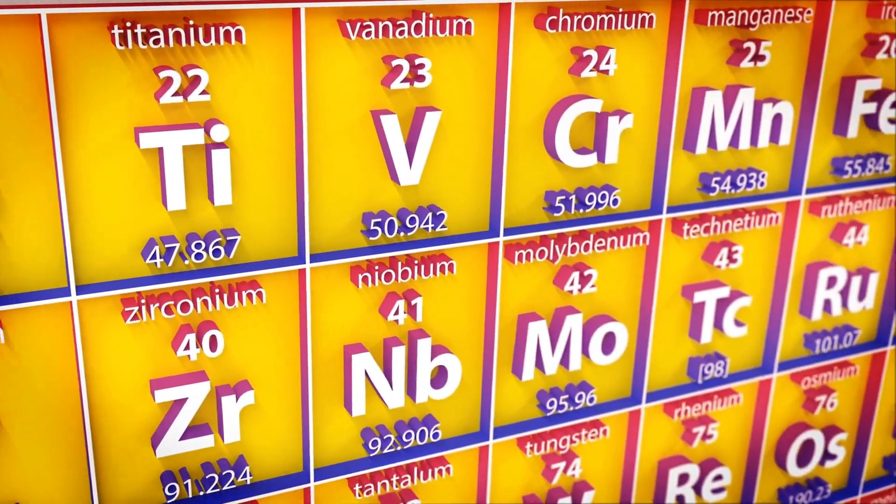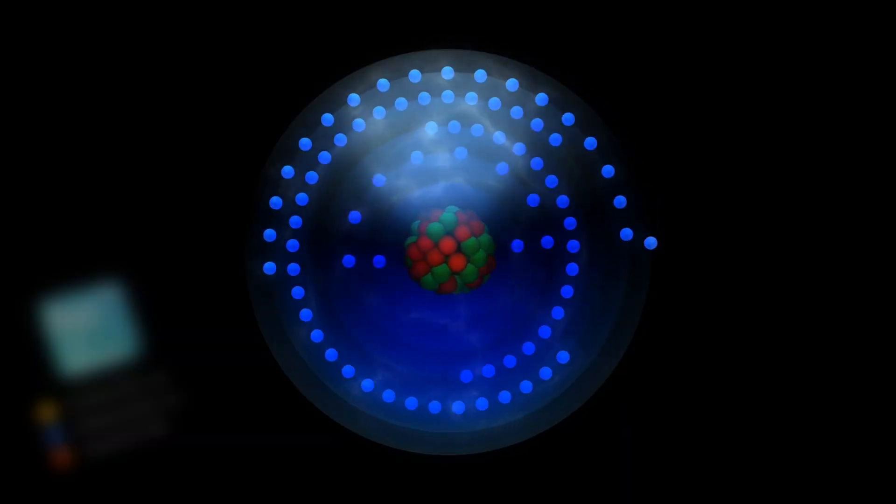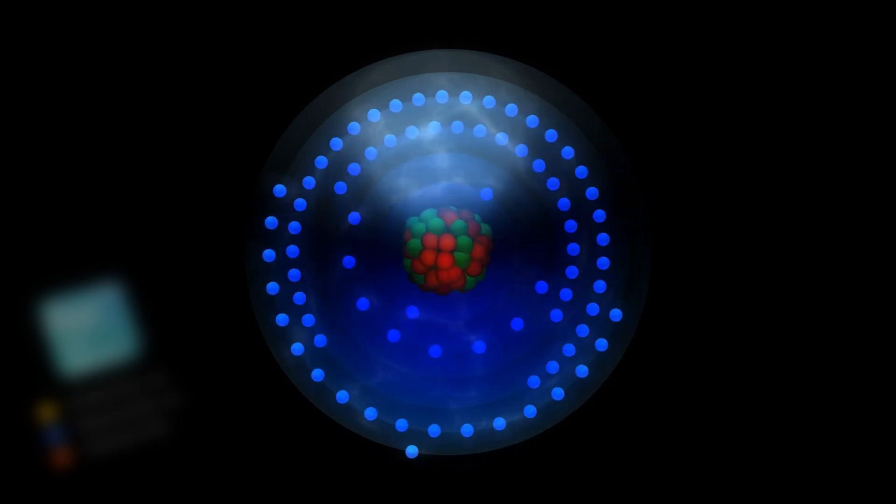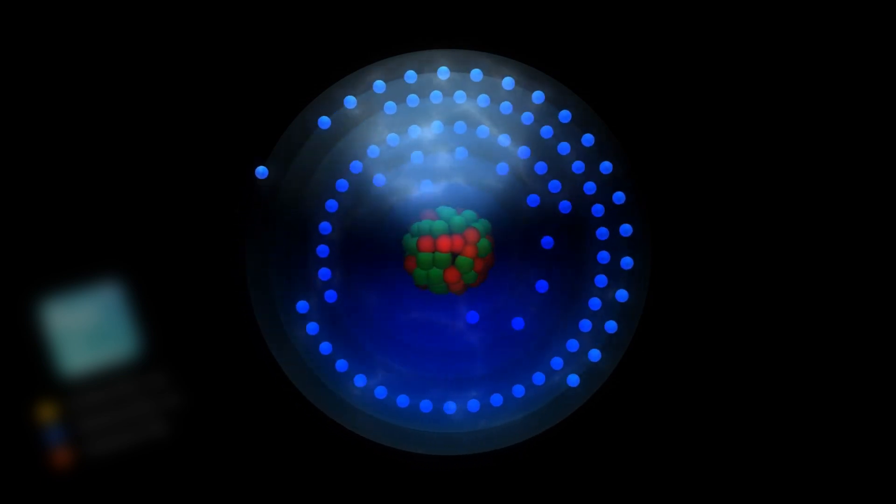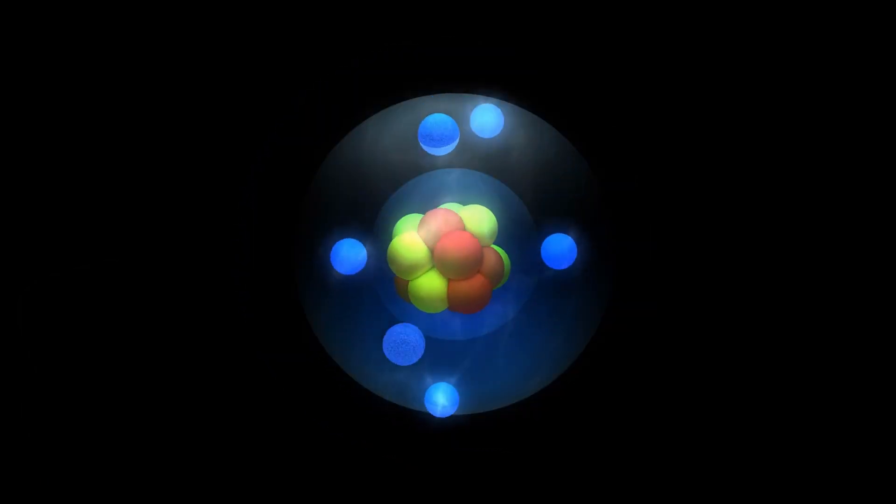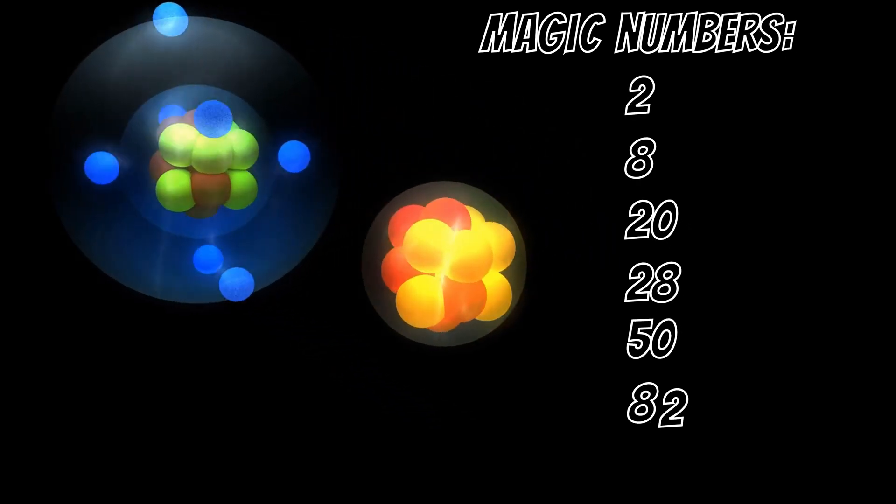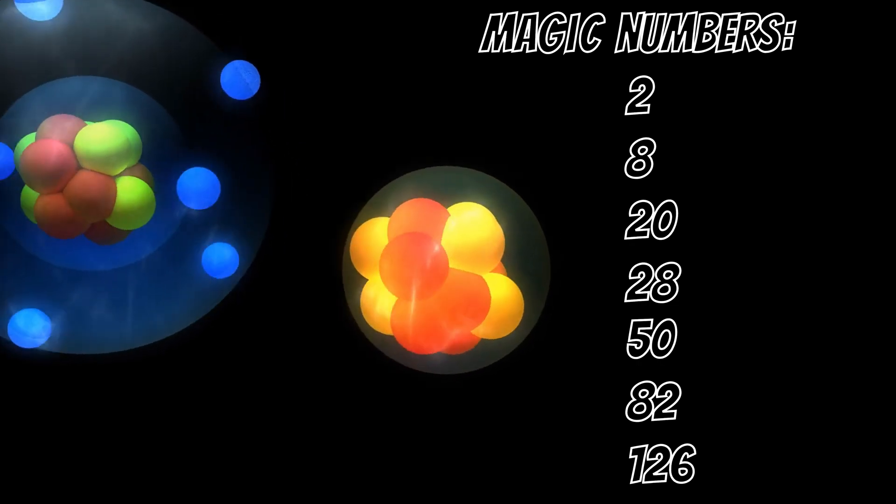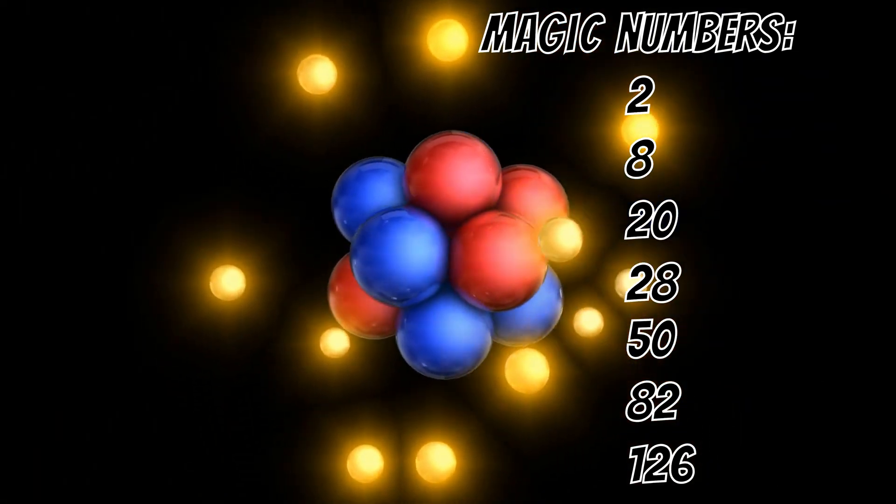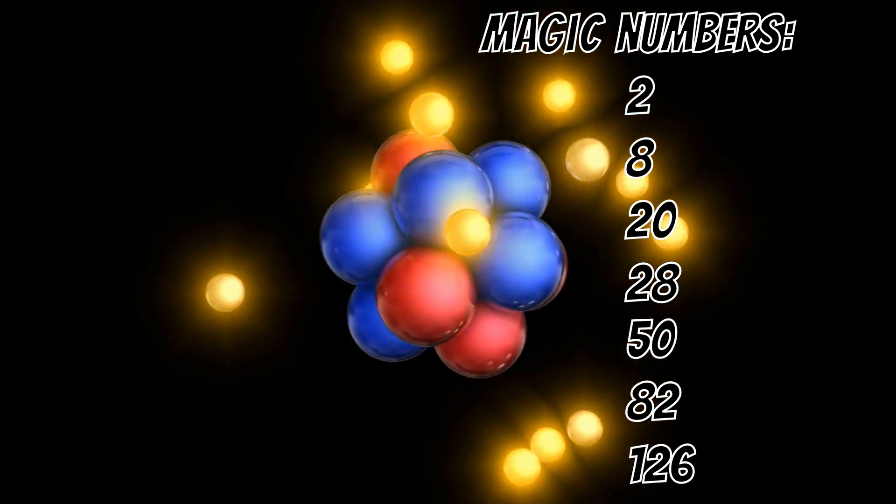You see, in the standard shell model picture of nuclear structure, there are so-called magic numbers of protons and neutrons corresponding to spherical closed shells. These numbers are 2, 8, 20, 28, 50, 82, and 126. Nuclei with these numbers of protons and/or neutrons should be particularly stable.